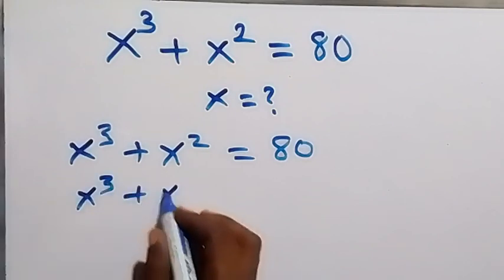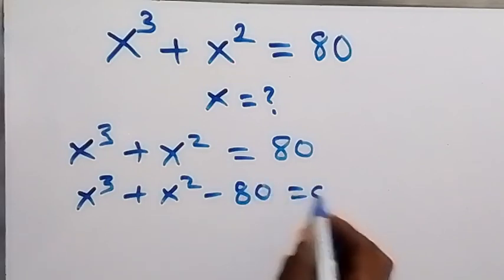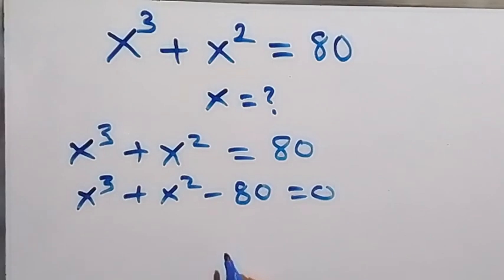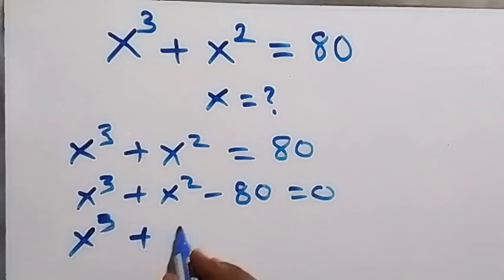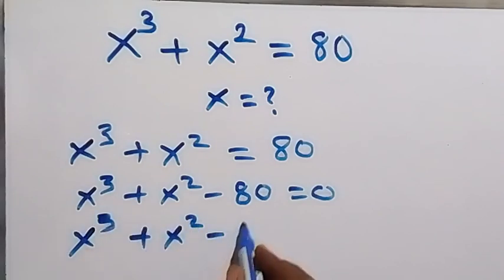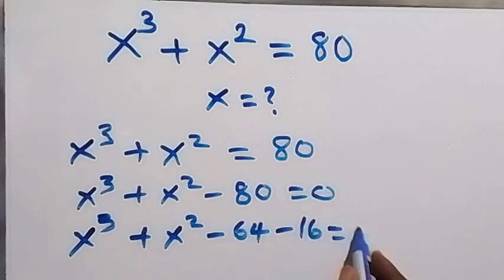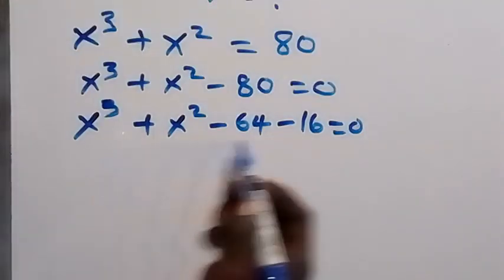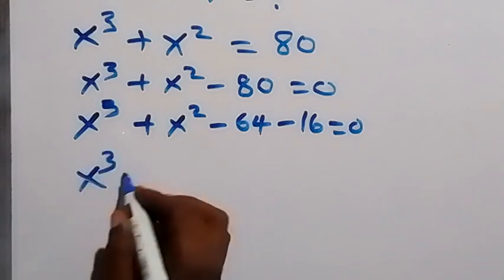We can write minus 80 as minus 64 minus 16. So we have x³ + x² − 64 − 16 = 0. In the next step we bring 64 together with x³, giving us x³ − 64, then plus x² − 16 = 0.